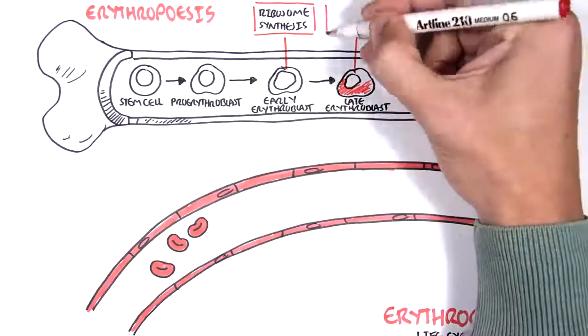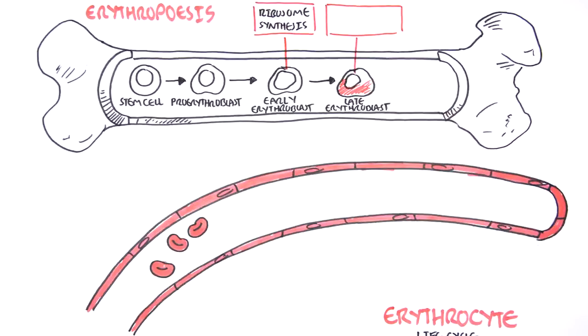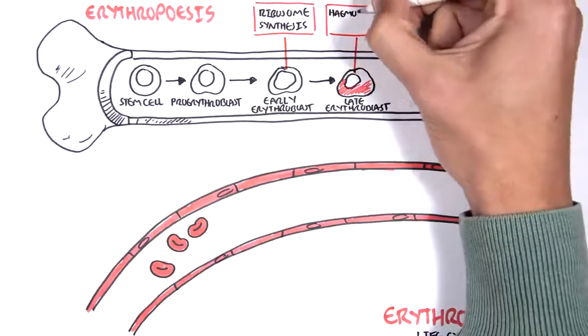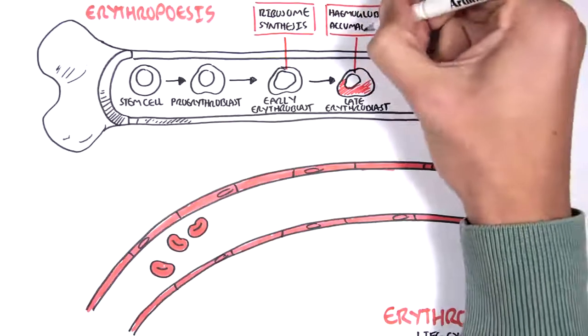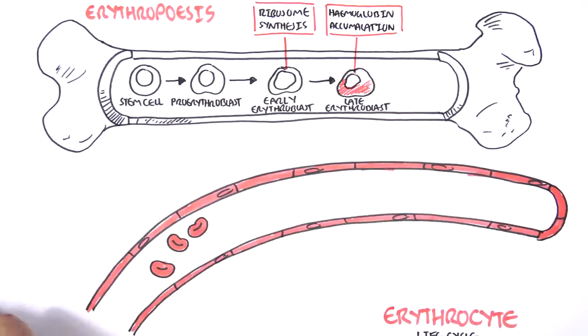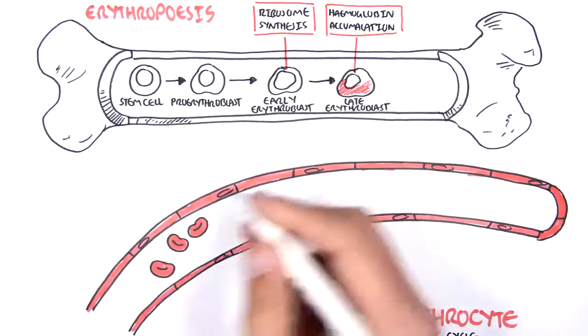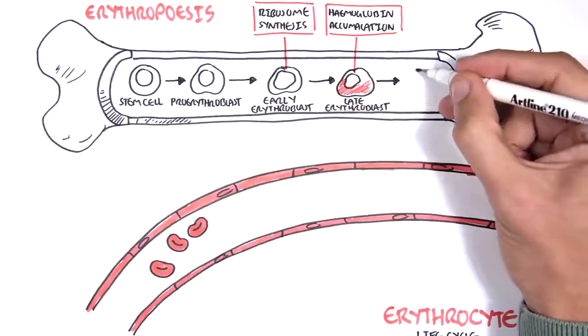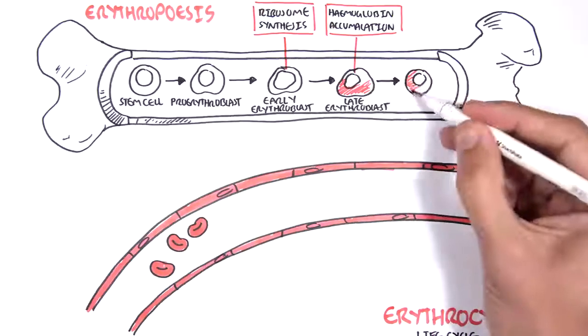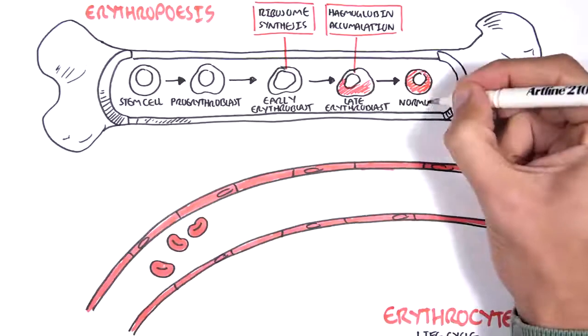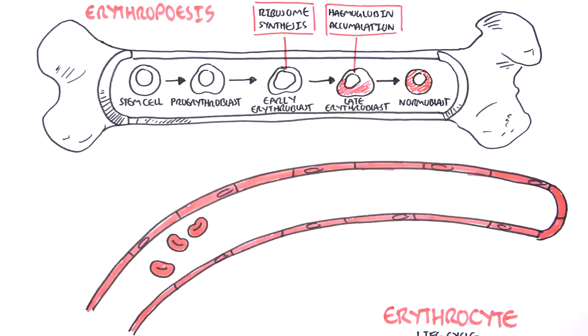the ribosomes are synthesizing a lot of hemoglobins. And so we have hemoglobin accumulation. Hemoglobin is the molecule within red blood cells that actually carry the oxygen. So this late erythroblast can then develop into a normoblast. And normoblast already contains all this hemoglobin.